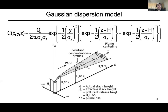This equation includes some emissions, some wind speed, some dispersion parameters, and takes this exponential Gaussian-looking form — which is why it's sometimes called the Gaussian plume model or Gaussian dispersion model. That's the guts of how it works. There are different forms of this equation depending on what you assume about dry deposition and different assumptions about the spatial coordinates, but this is the core of what's happening.